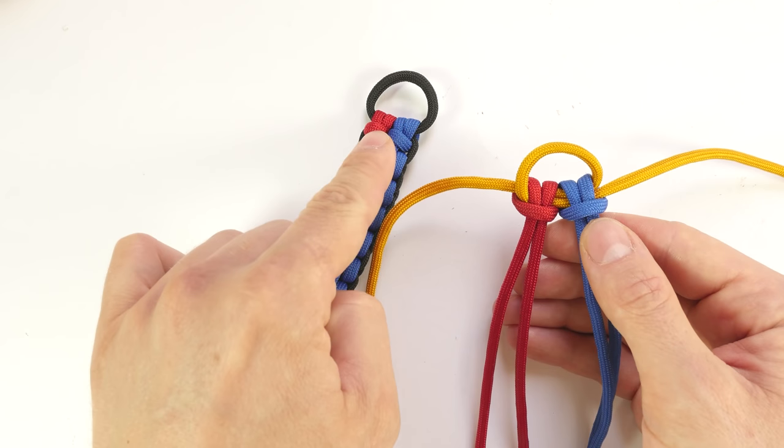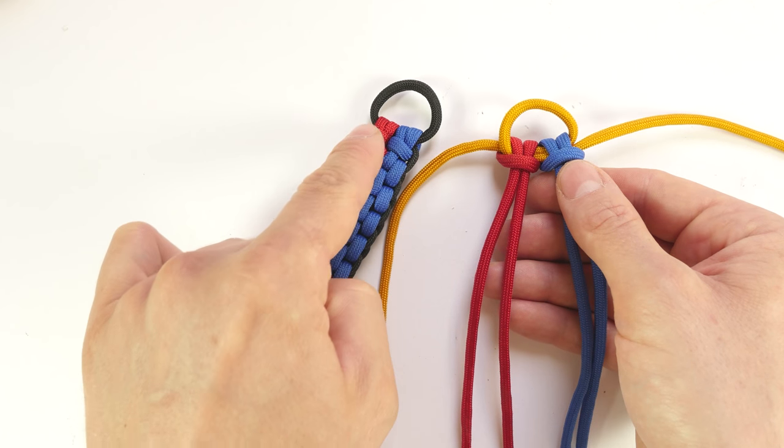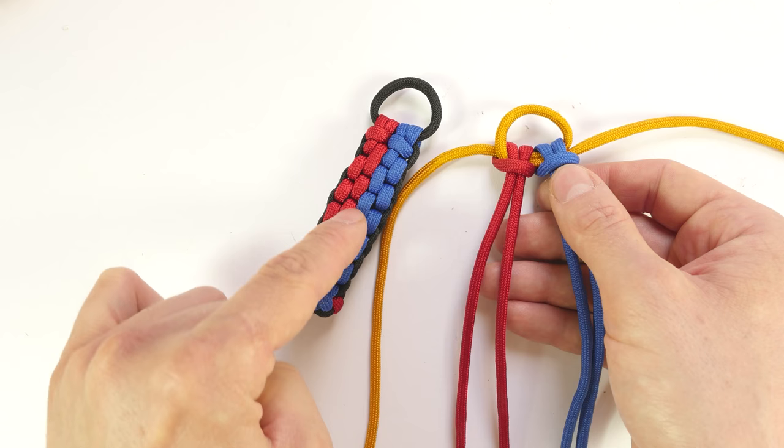So this would be the end result. We have a loop at the top, then two lark's head knots and then we can start our double box knots sinnet.